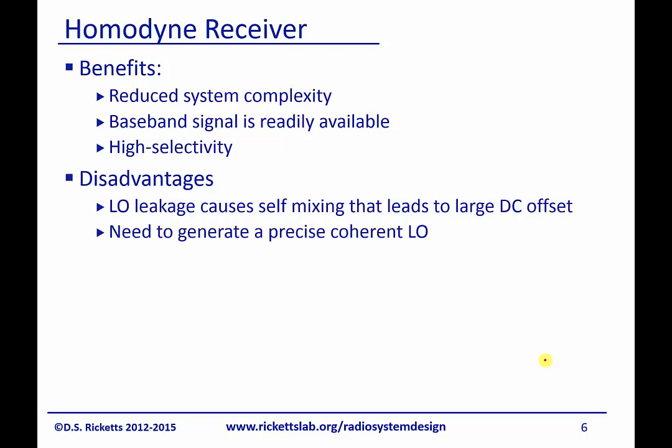The disadvantages are that LO leakage can cause self-mixing — if the LO mixes with itself it creates a DC offset, and that offset can actually be much larger than your actual signal. The other problem is you need to create a precision coherent local oscillator that matches your incoming signal, which typically involves a phase-locked loop and possibly some digital signal processing to determine the incoming signal's phase and frequency and match it exactly.